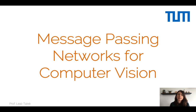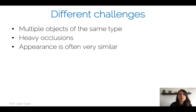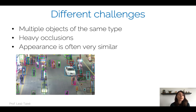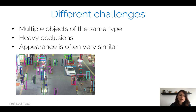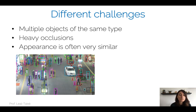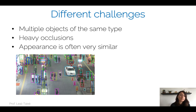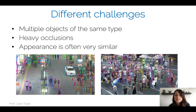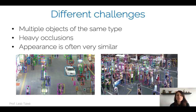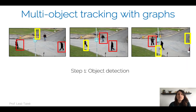Let's see how we can use message passing networks in computer vision. We'll start with the task of multiple object tracking, which means detecting and following — tracking over time — multiple objects, usually of the same type. You can see here a scene that is quite challenging: heavy occlusions, very similar appearance of different objects. We want to detect these objects and track them over time without mistakes. The field of multiple object tracking is a very interesting field with lots of challenges. One way to tackle this problem is by using graphs.